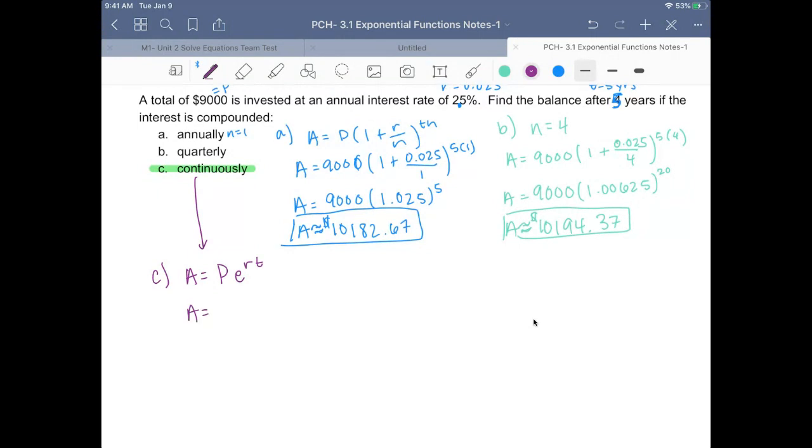So the amount is 9,000 times e raised to 0.025 times 5, and I plug that into my calculator and I get $10,198.34, about equal.